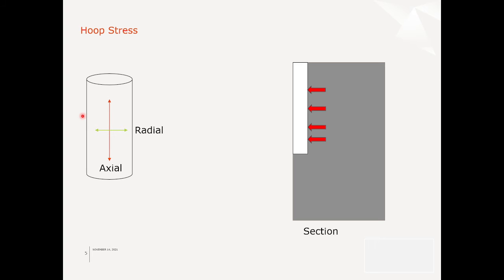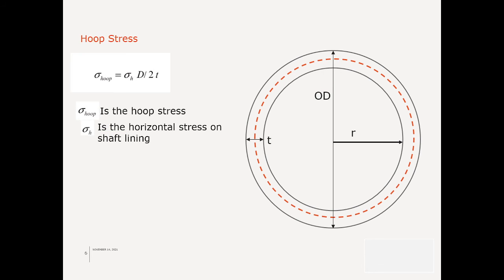So looking at the circumferential stress, which is also called hoop stress: if you're looking in plan, this is your shaft OD, ID with the thickness t which we are considering as 1.2 meters, radius we are taking at 5 meters so the internal diameter of 10 meters. Empirically you calculate the hoop stress by this formula: σ_hoop = σ_h × D / (2t), where t is the thickness, σ_hoop is the hoop stress, and σ_h is the horizontal stress acting on the lining.